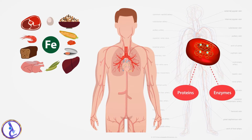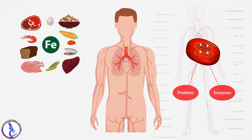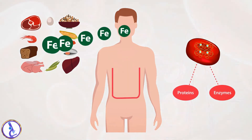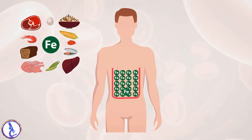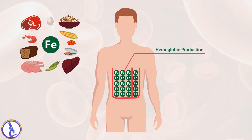Normally, about 70 percent of the iron absorbed is incorporated into the production of hemoglobin inside red blood cells. The remainder is stored in the tissues as ferritin or hemosiderin.